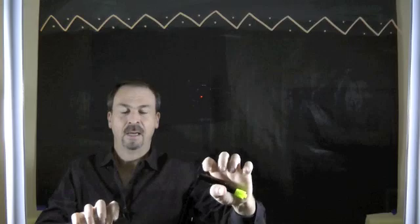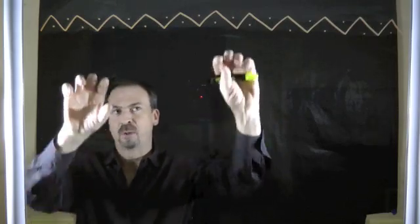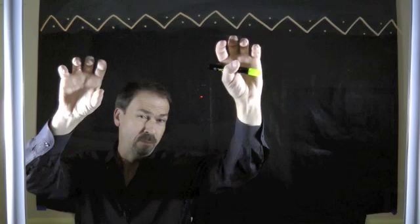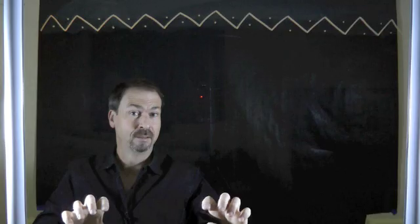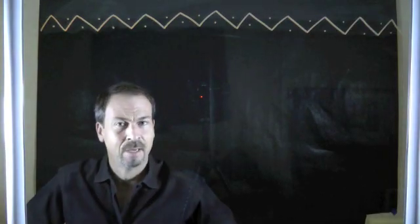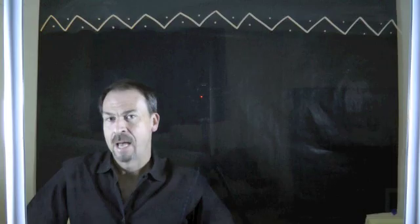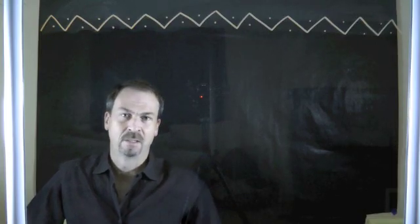But if I put a very light string between them, suddenly they're now one object, though I don't know how the object is meant to tell, and they're now meant to fall at the same rate. How is this possible? So by pure reasoning, Galileo argued it can't be right.